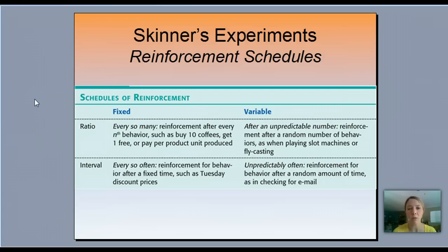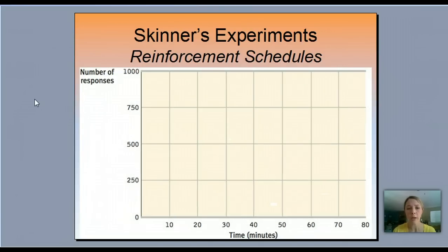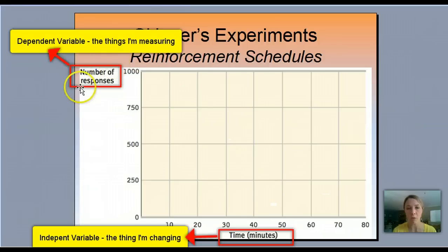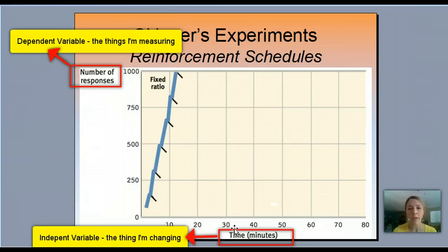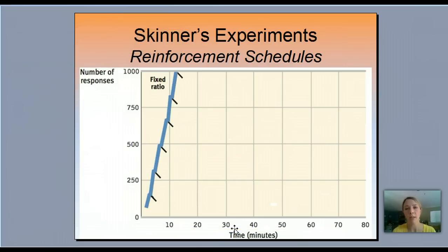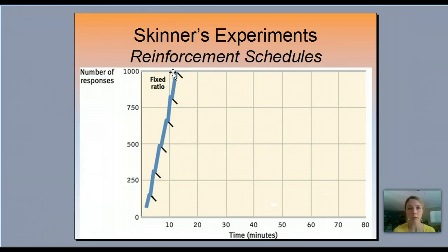Now let's focus on what these schedules have to do with learning. Looking at a graph with time on the x-axis and number of responses on the y-axis — number of responses is dependent on how much time has gone by. On a fixed ratio, every single time I get a behavior I get a response: press the lever, get food. So over a very quick amount of time I get a high number of responses. Fixed ratio is the best way to get immediate learning.